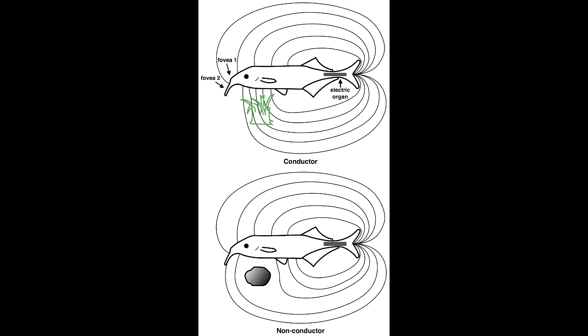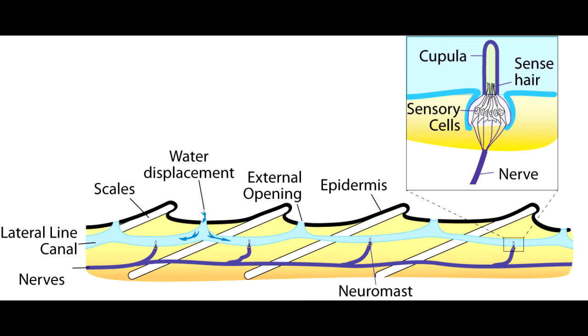The first specialized electrosensory structures discovered were the ampullae de Lorenzini. Ampullae are small tubular cavities containing an electrolytic jelly which maintains the same electric potential as the water immediately adjacent.